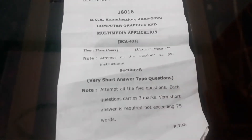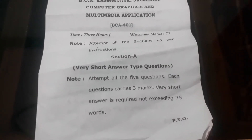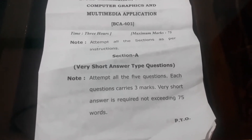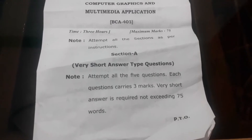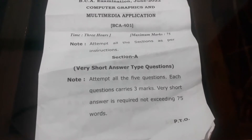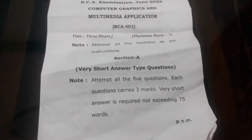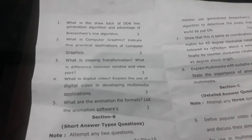Section A is the very short answer type question section, which has 5 questions and you have to attempt all of them. The word limit is 75 words per answer — you should not write more than 75 words for any answer in this section.